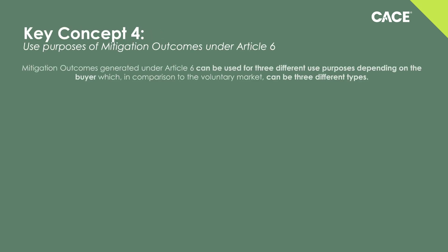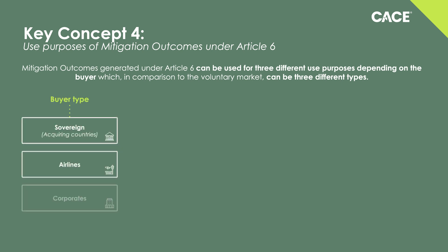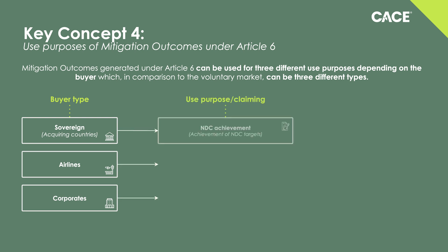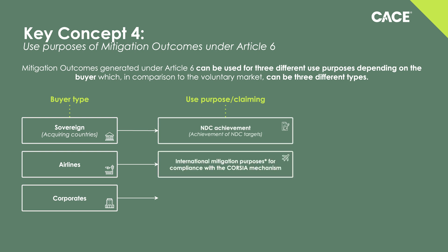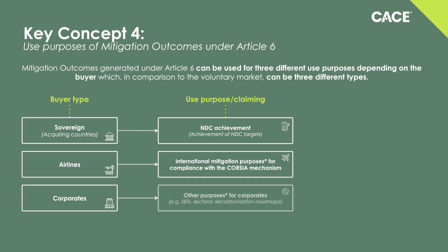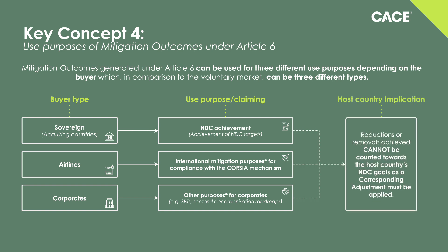Both mitigation outcomes from Article 6.2 and emission reductions from Article 6.4 can be used for different purposes, such as achieving acquiring countries' NDCs, meeting international mitigation obligations like CORSIA, or contributing to voluntary climate actions by corporations. To be utilized under such use purposes, both mitigation outcomes and emission reductions must be authorized.